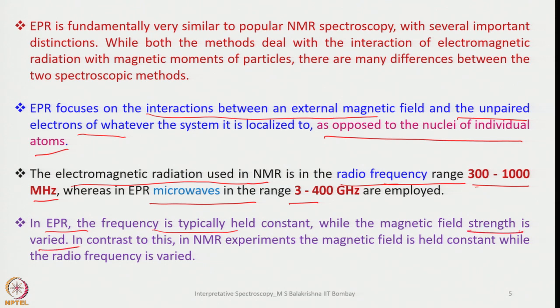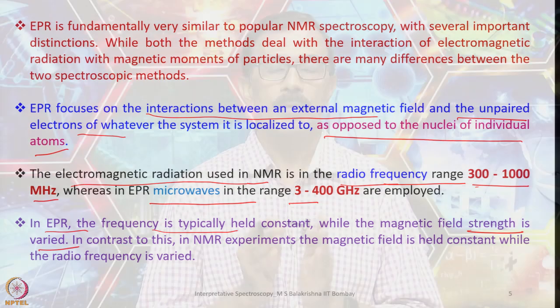In contrast, in NMR experiments the magnetic field B₀ is held constant while we tune the radio frequency to match the Larmor frequency of the nuclei, which is perturbed by local magnetic fields that can either align with or oppose the applied field. In EPR, the microwave radiation is held constant and the magnetic field is varied.